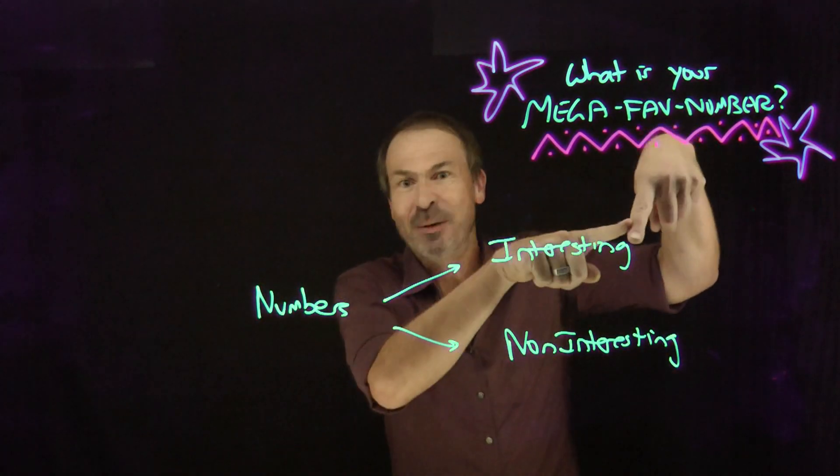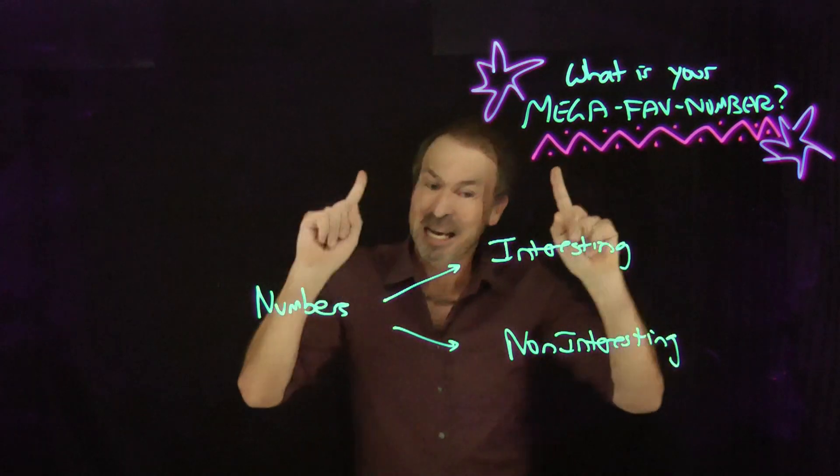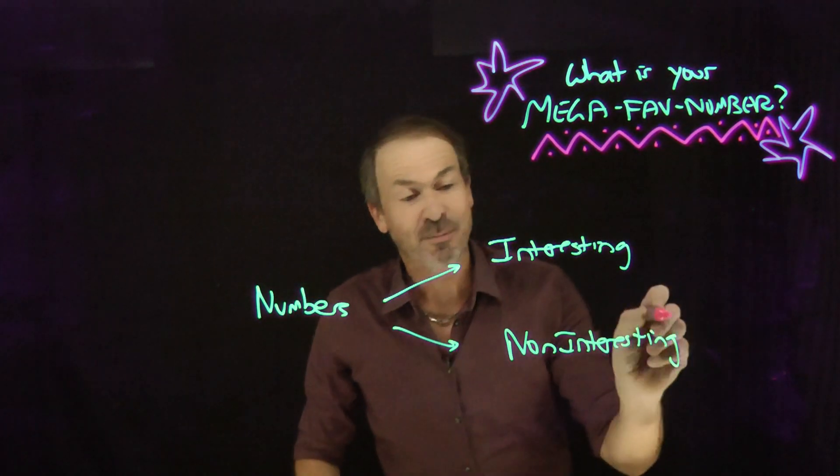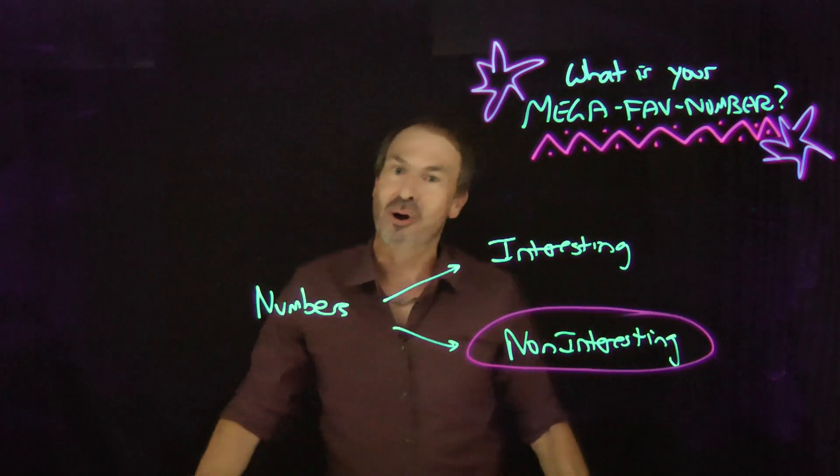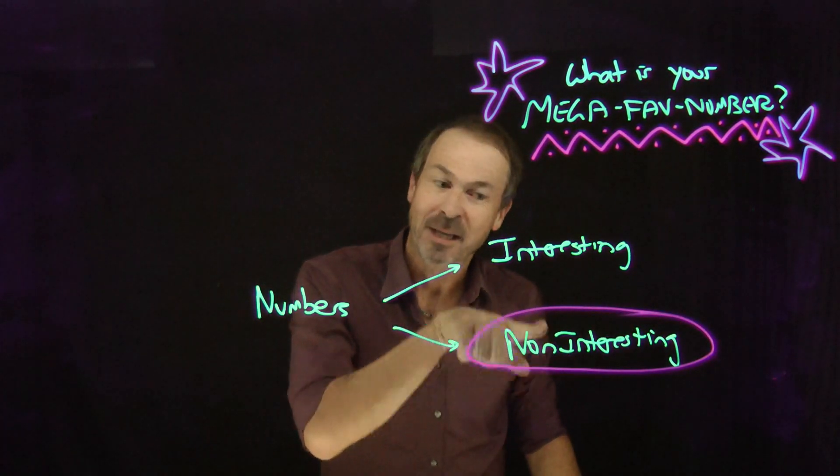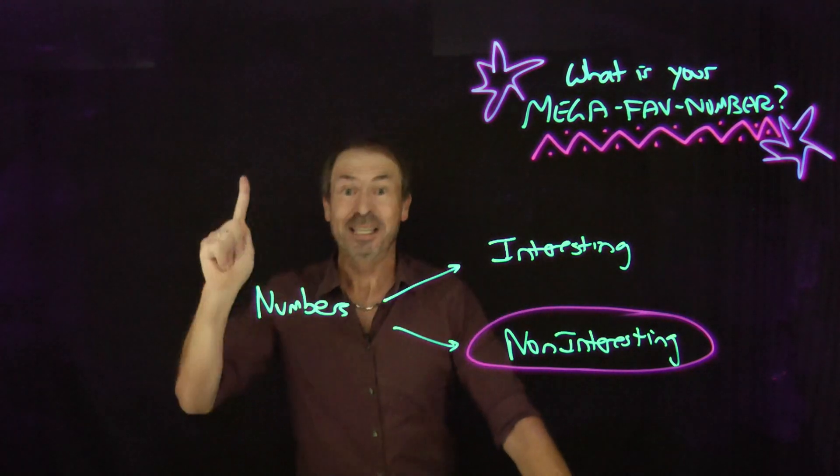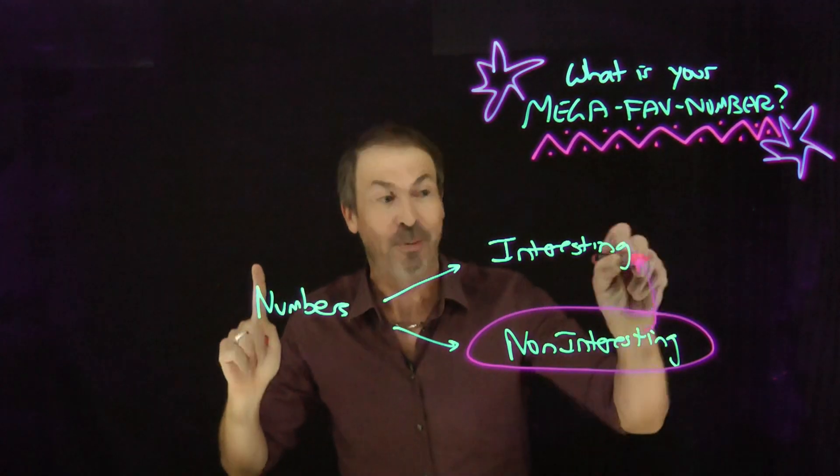They're going to split into two sets, the interesting ones and the non-interesting ones. But think about it. If they really do split into two sets like this, ask what's the smallest number that lands up amongst the non-interesting ones? The smallest non-interesting number. So something in here is going to be the smallest one and it will be the first non-interesting number which would suddenly make it interesting. It doesn't belong in there. It belongs up there.